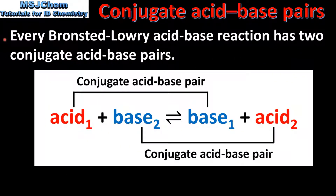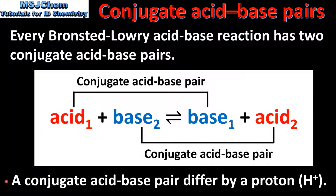Every Bronsted-Lowry acid-base reaction has two conjugate acid-base pairs. In this general reaction, acid one and base one are a conjugate acid-base pair. Base two and acid two are also a conjugate acid-base pair. A conjugate acid-base pair differ by a proton, which is a hydrogen ion. So base one will have one less proton than acid one, and base two will also have one less proton than acid two.